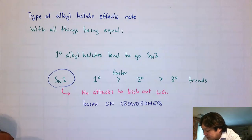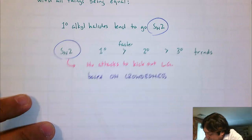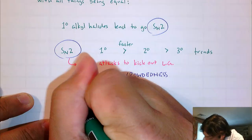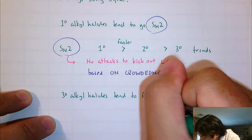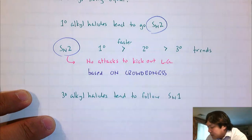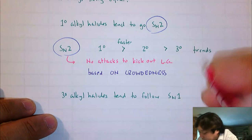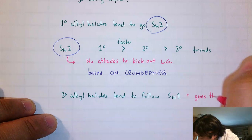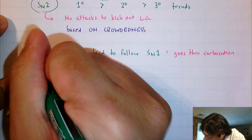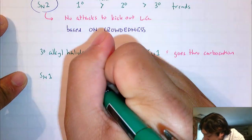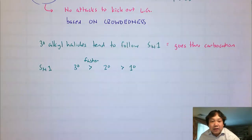What about SN1? It's actually the opposite. So again, our first example is SN2. But when we go to SN1, tertiary alkyl halides tend to follow SN1. What should you always think about when someone says it's going through an SN1 process? You should always think about that it goes through a carbocation.